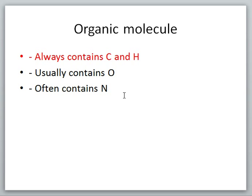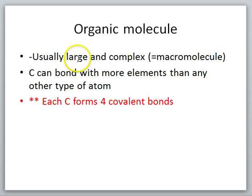Another characteristic is that an organic molecule is usually large and complex, and we refer to this as a macromolecule. The nature of carbon is what allows these organic molecules to be so large and complex. Carbon has a characteristic that it can bond with more elements than any other type of atom. Carbon will always form four covalent bonds around itself. So carbon is sort of the ultimate Lego block — it has four connectors.